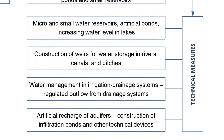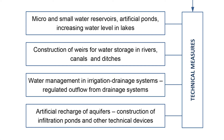Technical methods include construction of small water reservoirs, building artificial ponds, wells for water storage in rivers and lakes, proper water management in irrigation and drainage systems, regulated outflow from drainage systems, and artificial recharge of aquifers by construction of infiltration ponds and other technical devices. The above classification is not very strict — in some non-technical measures it is necessary to construct hydraulic structures, for example for wetlands restoration when we have to raise the water table.